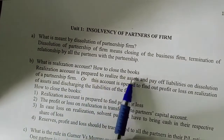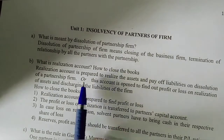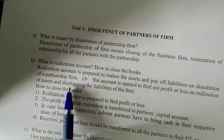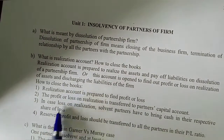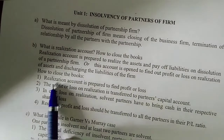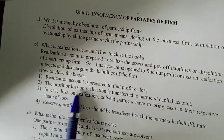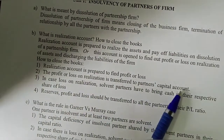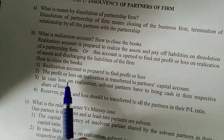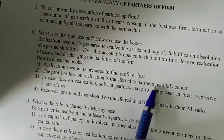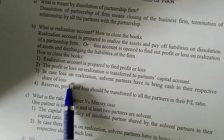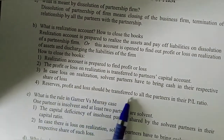To prepare a realization account, when a company is in dissolution, the company must assess its assets and ability to pay liabilities. To close the books, the following points are considered: first, the realization account is prepared to find out profit or loss; second, the profit or loss on realization is transferred to the partners' capital accounts according to their share; third, in case of loss on realization, solvent partners must bring in cash for their respective share of loss.